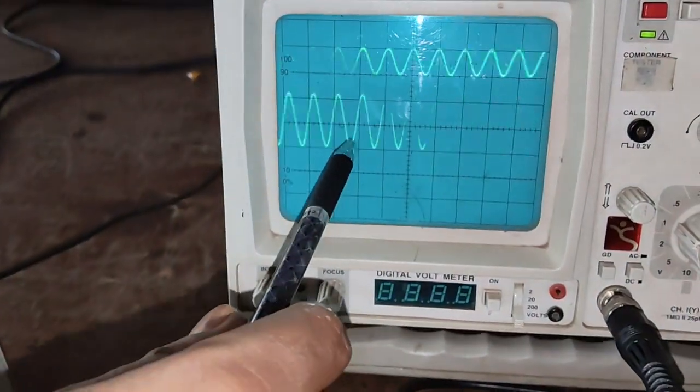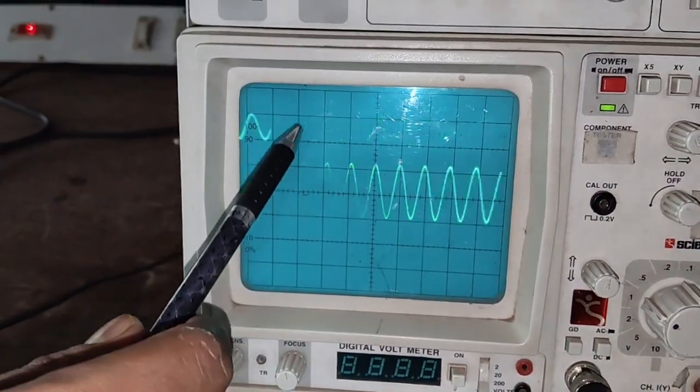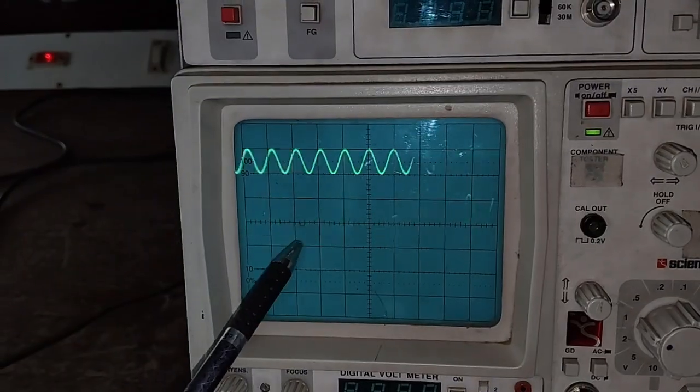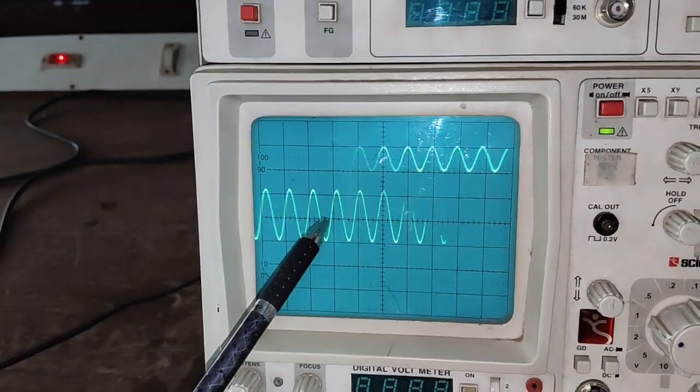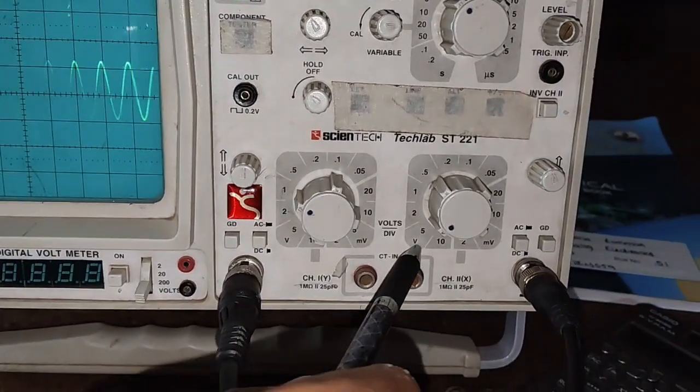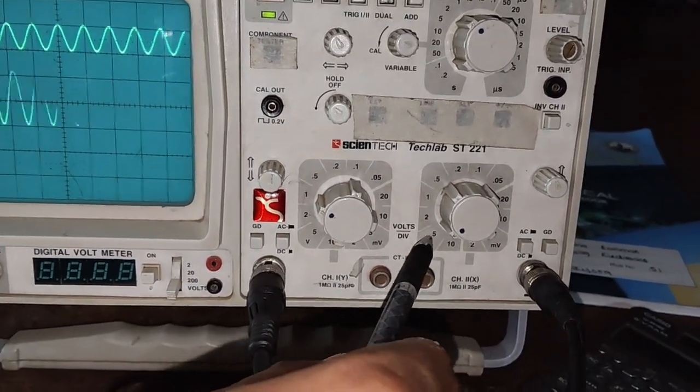Now we will get the output. Here we can see this is non-inverting output. Input is 1 volt and output here we are getting 1 to 2.2 times 5, that is 11 volts.